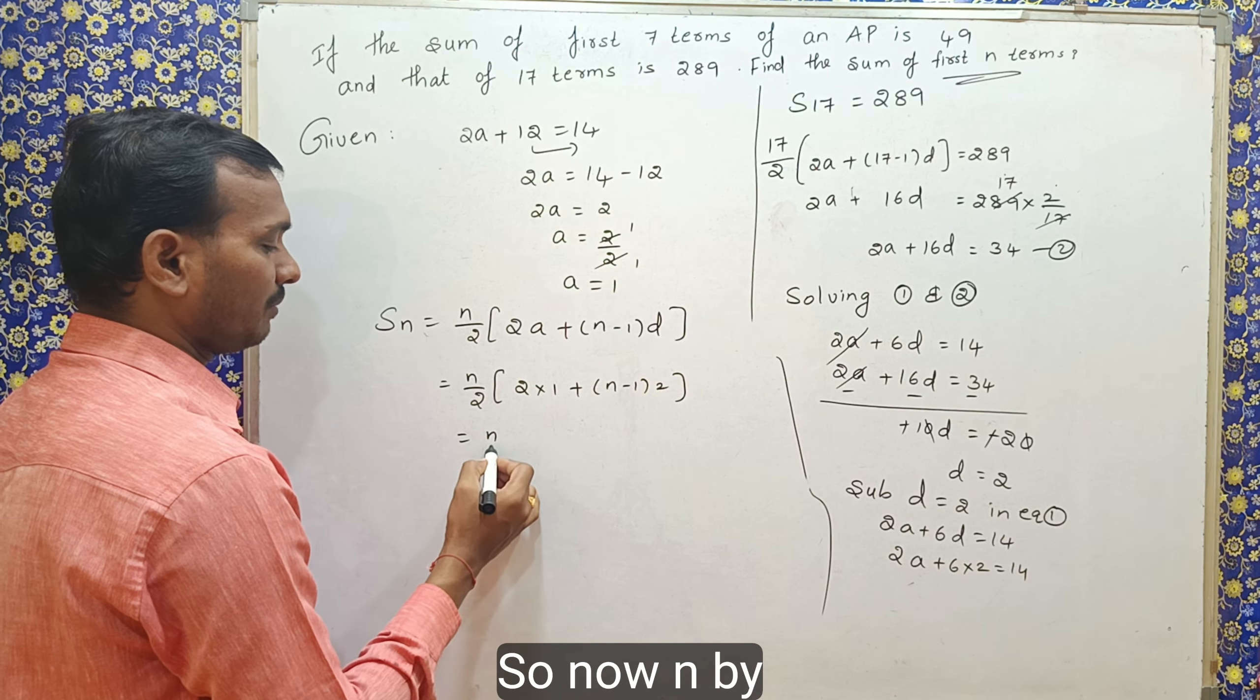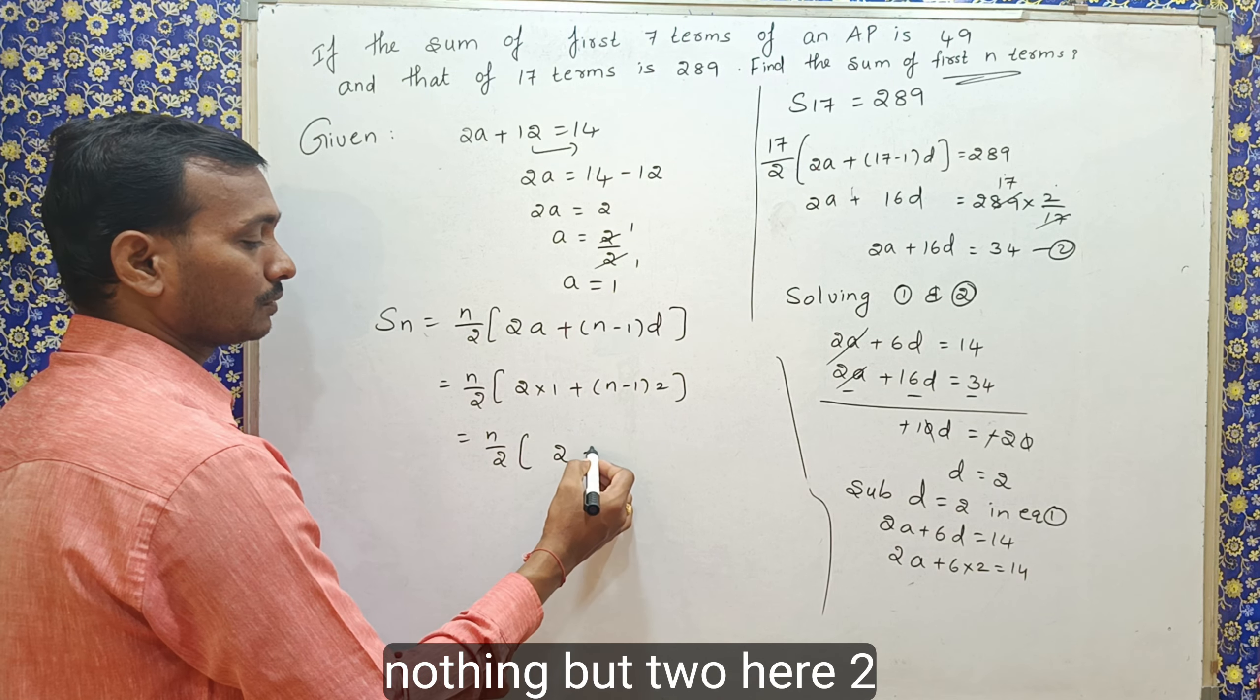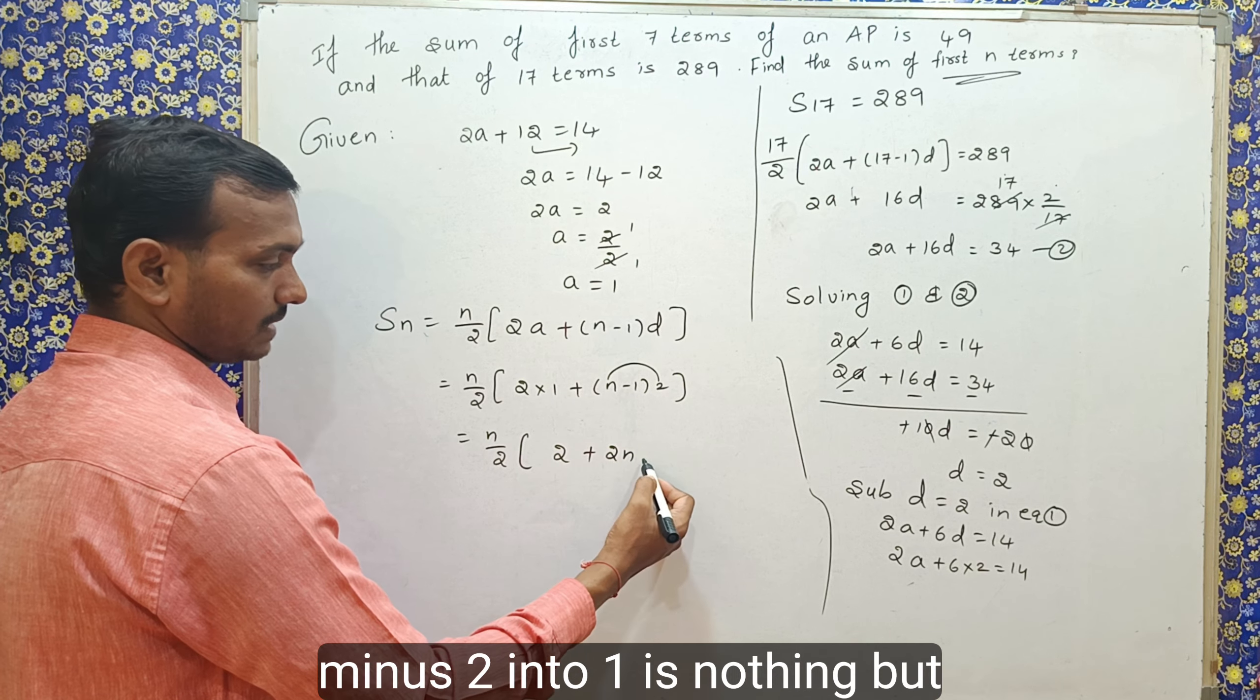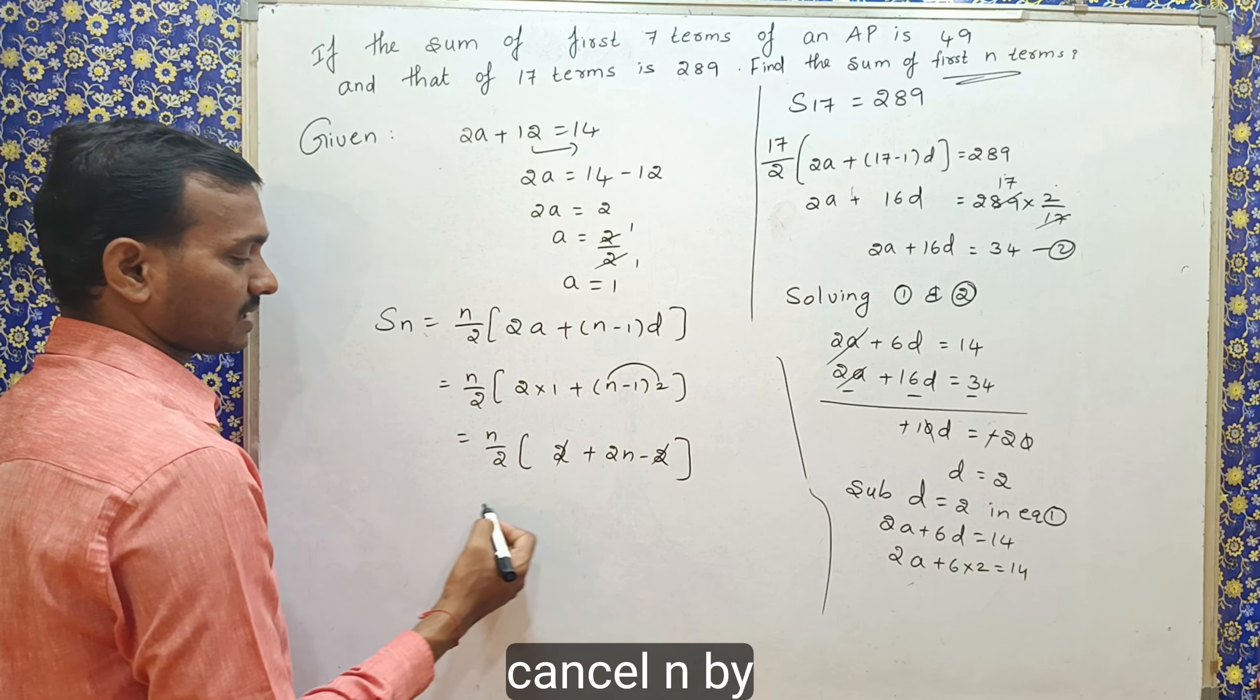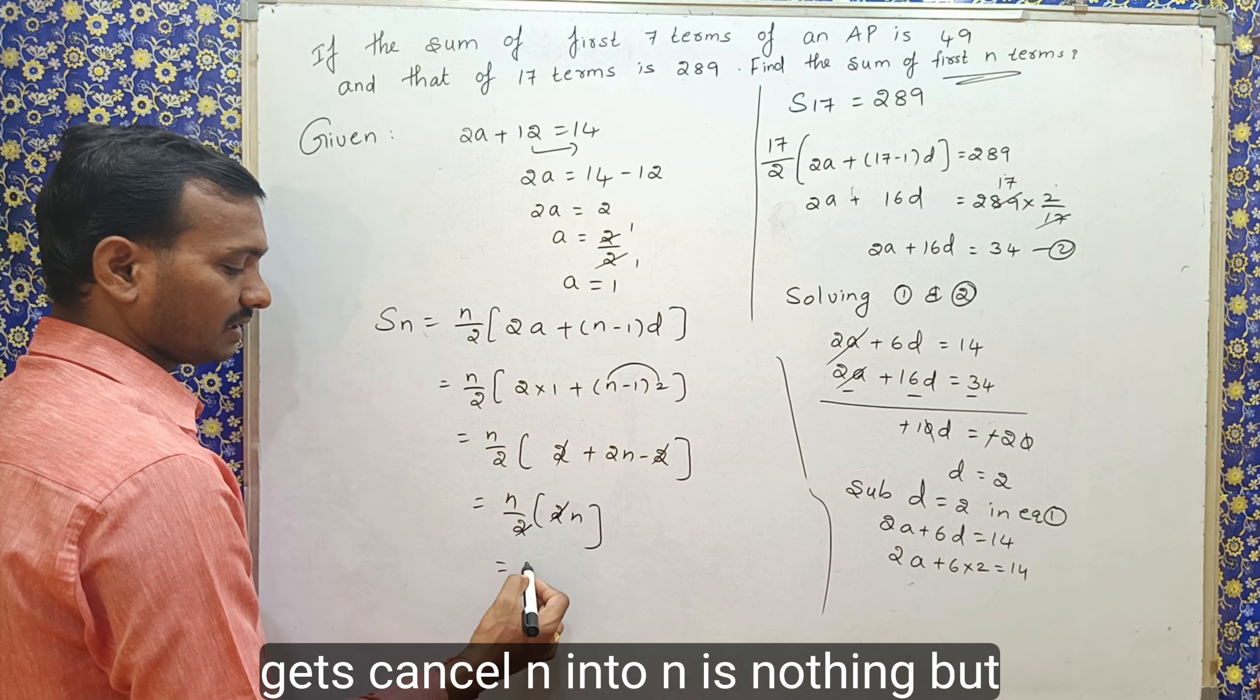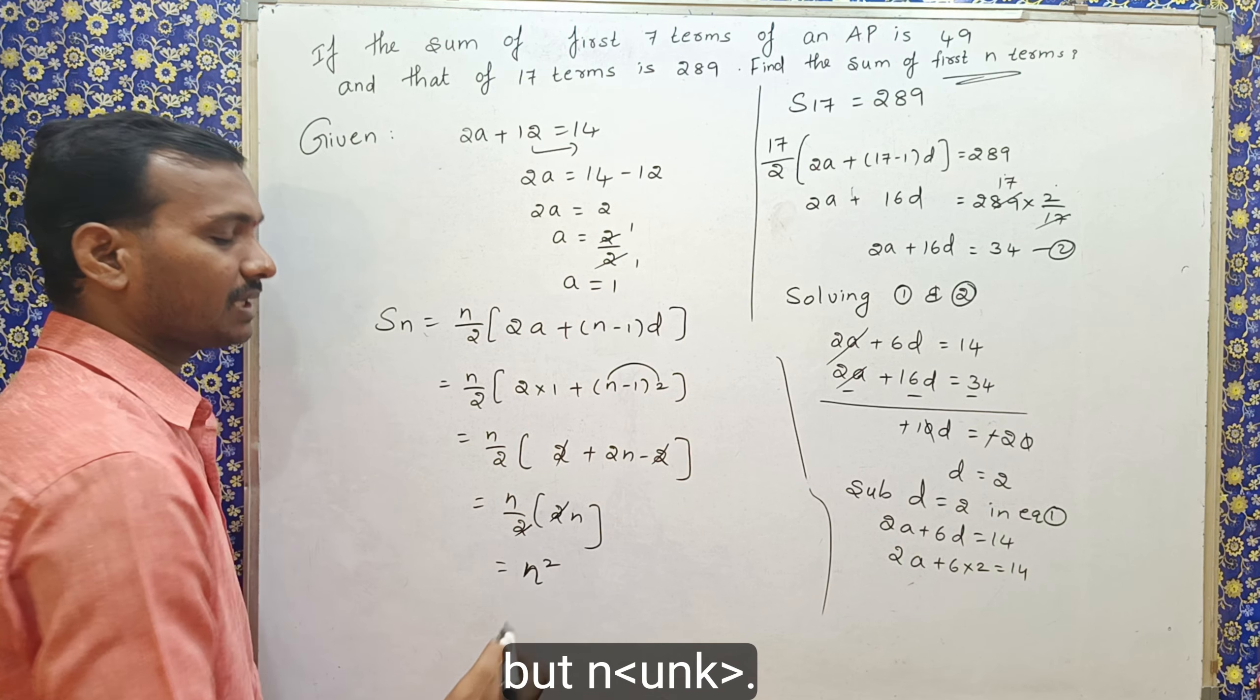So, now n by 2, 2 into 1 is nothing but 2. Here 2 into n is nothing but 2n, plus into minus is minus, 2 into 1 is nothing but 2. 2 gets cancelled, n by 2, this is 2a, 2 gets cancelled. n into n is nothing but n square.